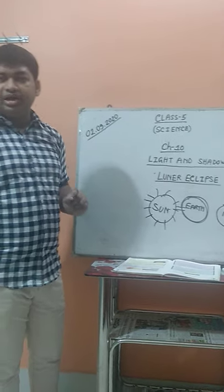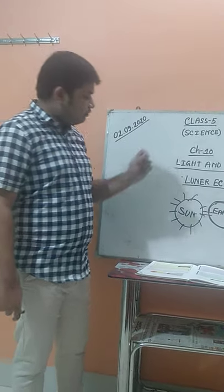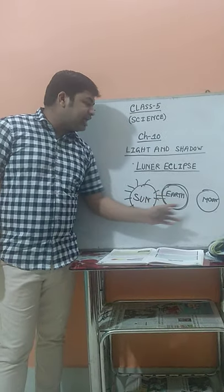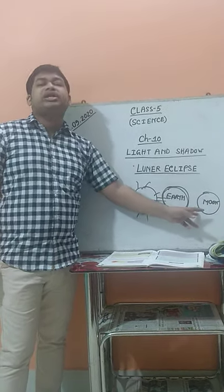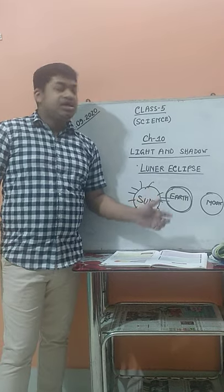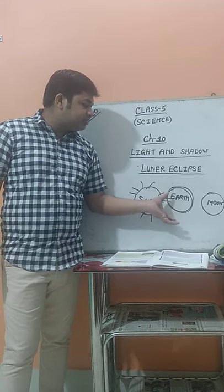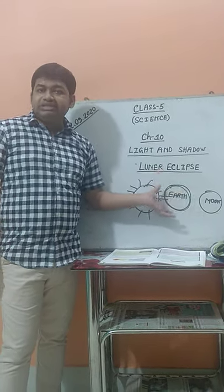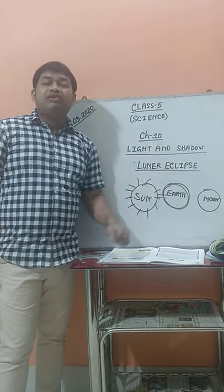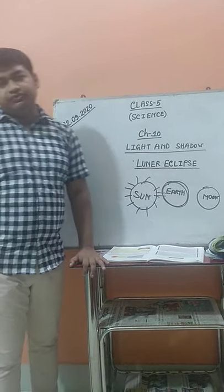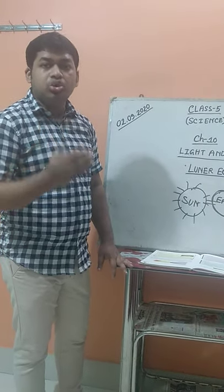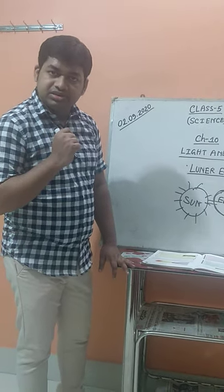What is the partial lunar eclipse? When the sun, earth, and moon do not come exactly in a straight line, a little amount of sun rays pass through over the moon's surface. This phenomenon is known by the name of partial lunar eclipse.